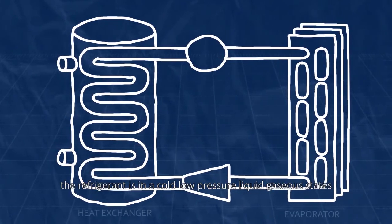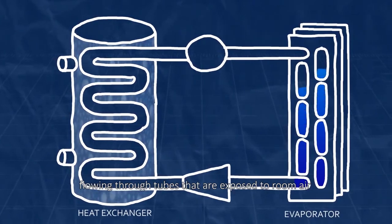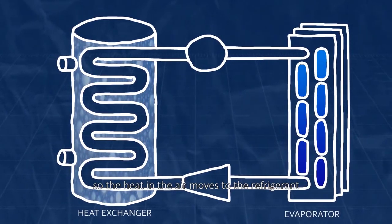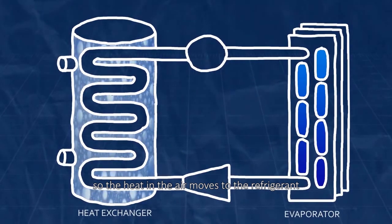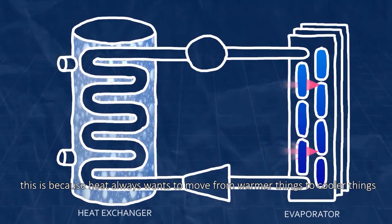In the beginning of a cycle, the refrigerant is in a cold, low pressure, liquid gaseous state flowing through tubes that are exposed to room air. It is colder than the room air, so the heat in the air moves to the refrigerant. This is because heat always wants to move from warmer things to cooler things.